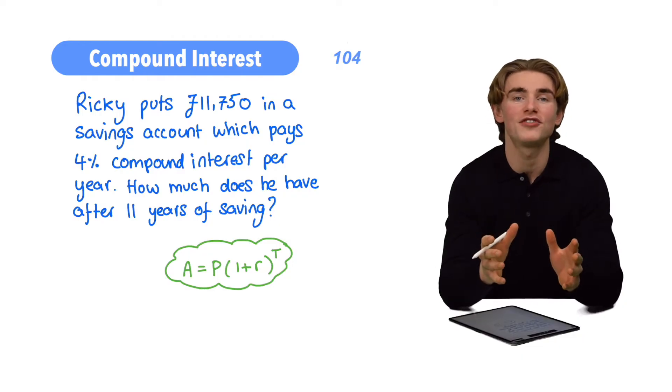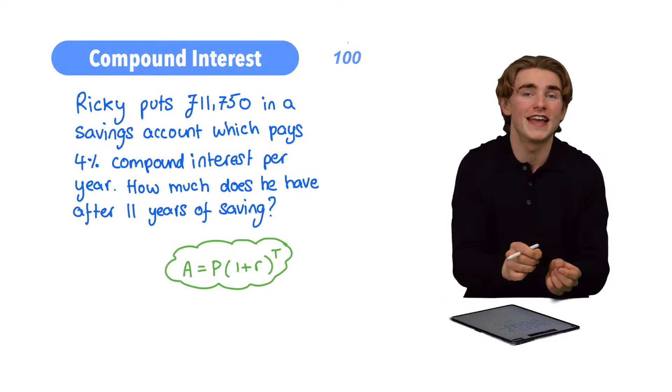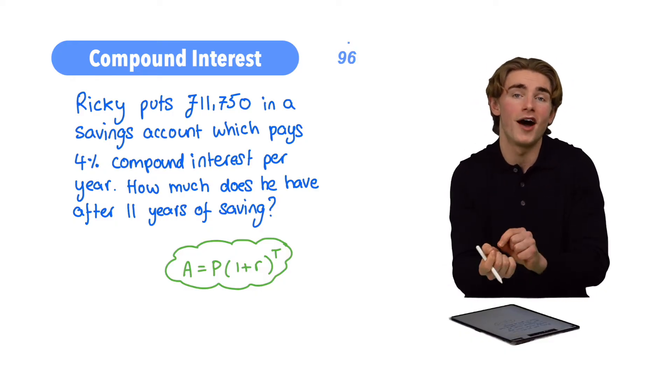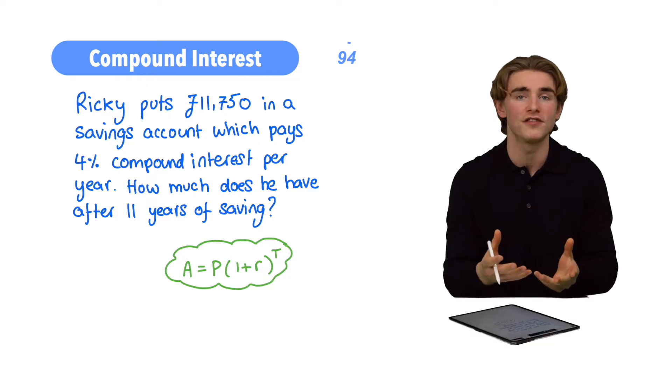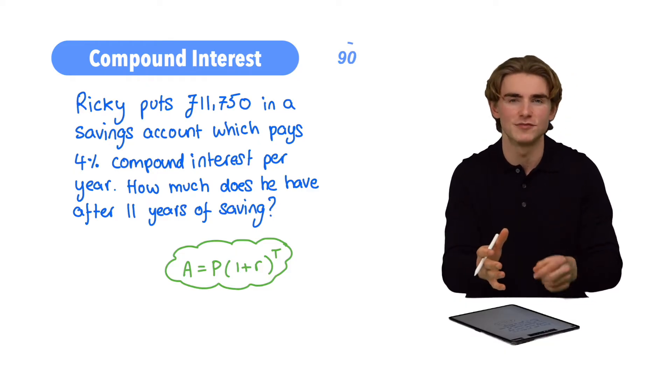Whenever it comes to working with compound interest, the key thing to remember is that the amount of interest earned in each time period depends on the amount of money in the account in the previous time period. Because of that, each time period, the amount of interest earned is going to change.